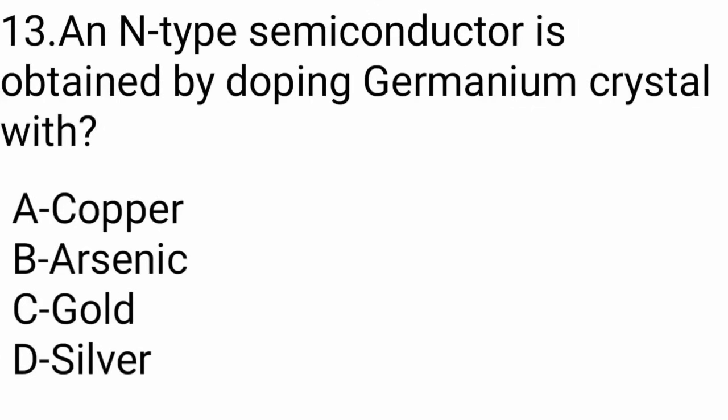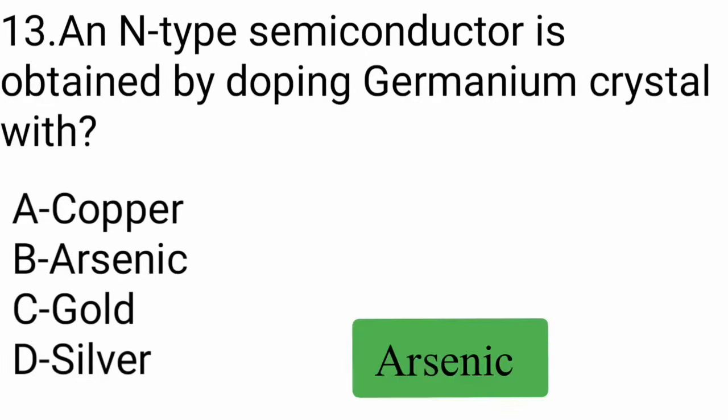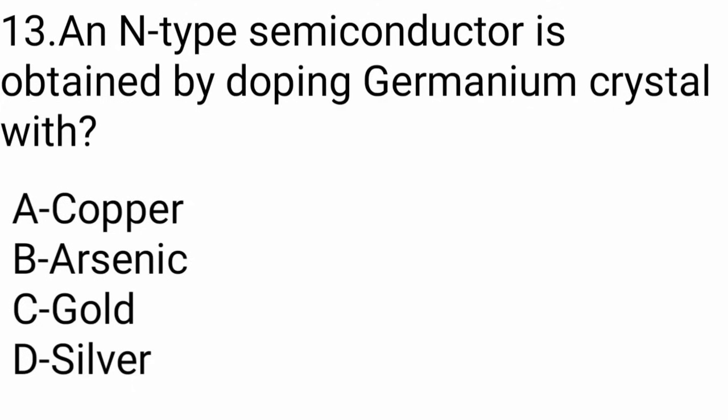Question number 13: An N-type semiconductor is obtained by doping a germanium crystal with — copper, arsenic, gold, or silver. The answer is arsenic. Semiconductor is an evergreen chapter for exams.